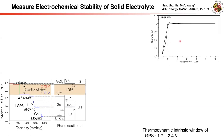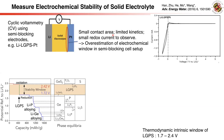In early literature, a 0V to 5V wide electrochemical window is often reported for lithium solid electrolyte materials. However, this wide window is an artifact. Cyclic voltammetry is often performed using semi-blocking electrodes, but this cell setup limits the solid reactions at the interface due to slow kinetics and a small reaction amount. As a result, the redox current is very small in the CV and difficult to observe.